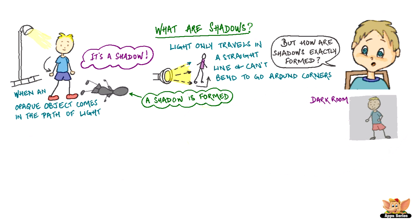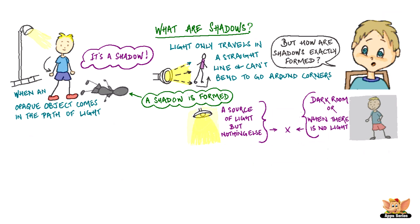Do you get your shadow in a dark room or at night when there is no light? Do you observe a shadow when there is just a source of light and nothing else in a room? No, we need a source of light and an opaque object to see a shadow.